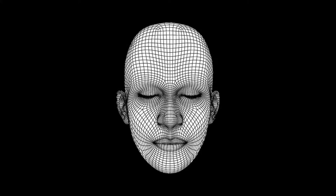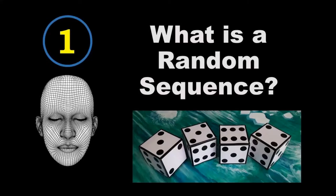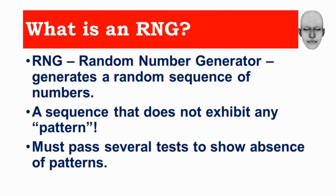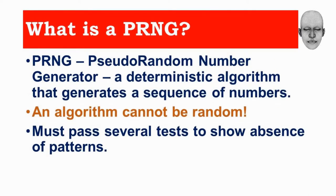Let's begin our study. A random number generator generates a random sequence of numbers, which means a sequence that should not exhibit any pattern, and these must pass several tests to show an absence of all kinds of patterns. A pseudo random number generator is a deterministic algorithm that generates a sequence of numbers — since an algorithm can never be truly random, if the sequence passes several tests showing the absence of patterns, we accept it as a PRNG.